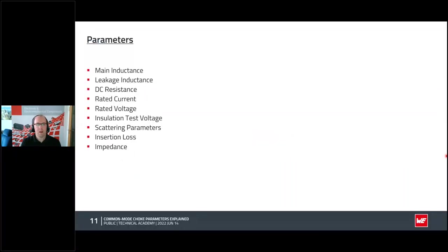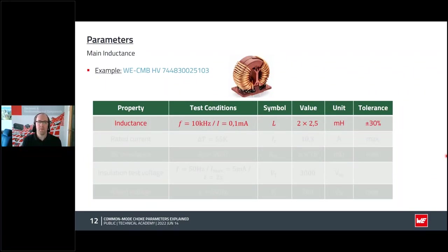Let's come to the parameters. Here is an overview of the main parameters I will cover. The first is the main inductance, indicated by the symbol L in the datasheet. In this example, each winding has 2.5 millihenries with a tolerance of ±30%. The factor of two written in the datasheet indicates two windings with equal inductance. The inductance is measured at a fixed frequency with a certain current amplitude, in this case 100 microamps.